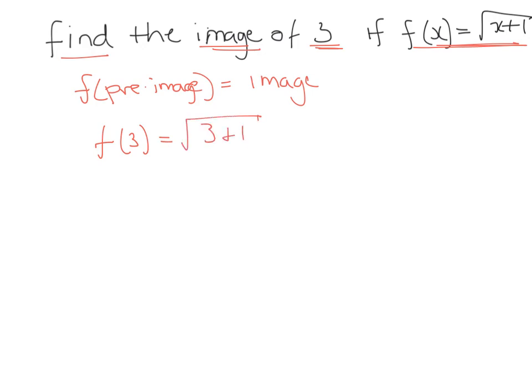Well, in place of x goes 3. 3 plus 1 is 4. Square root of 4 is 2. So the image of 3 is 2. All you've got to do is remember this part here. It's just exactly like it was before with the function notation.